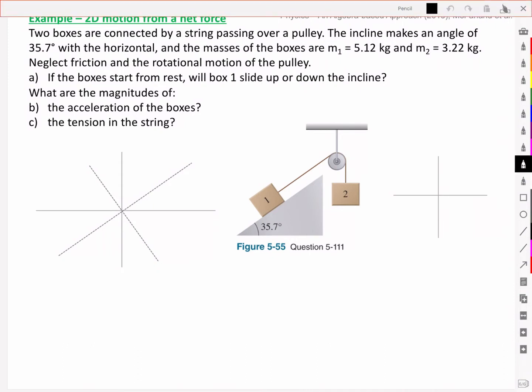Okay, let's take inventory. What have we got? We've got mass 1 here, on this side, is 5.12 kg. And it's heavier than the mass over here, mass 2, equal to 3.22 kg.